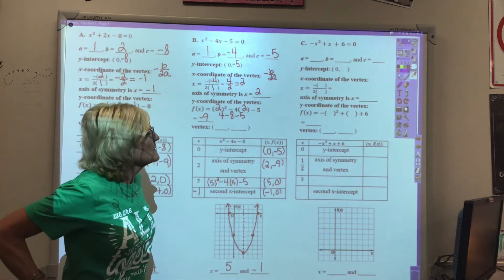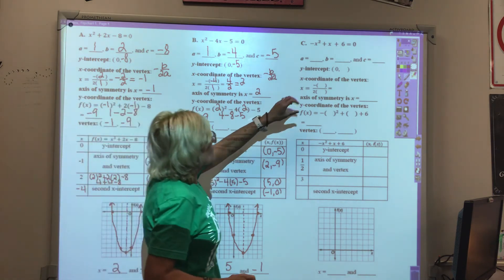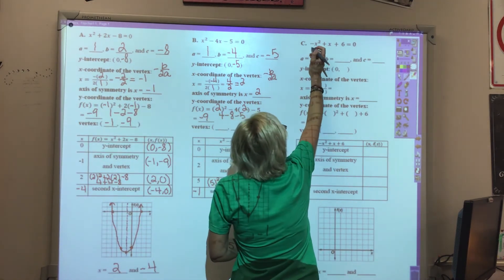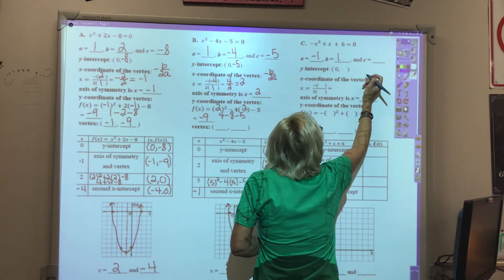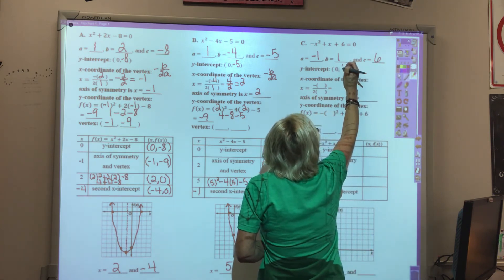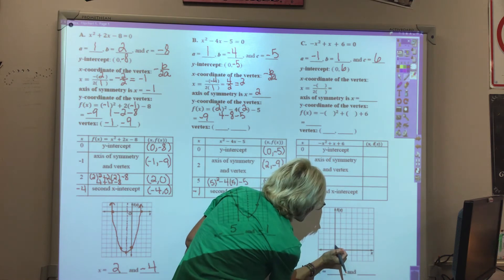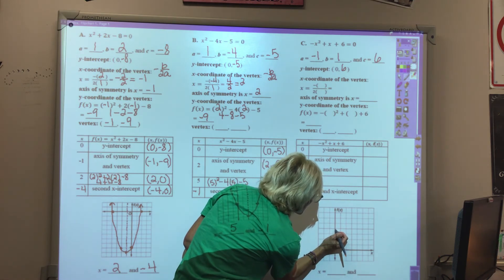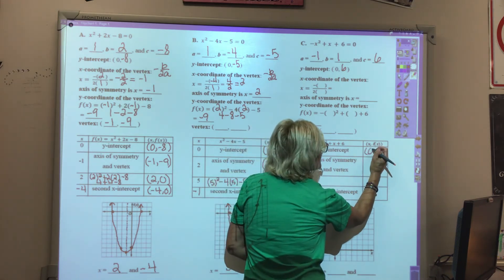Our last example, C. Our coefficients, this time we would have A would be negative 1, B is 1, and C is 6. So our y-intercept is at 0, 6. Plotting 0, 6 on the chart and graph.